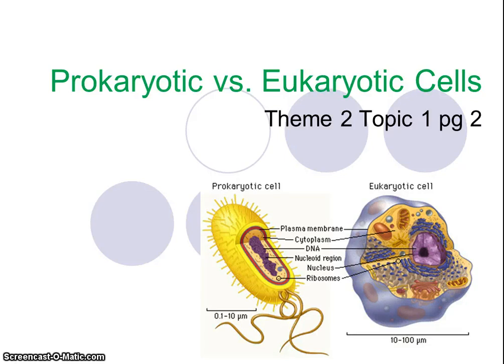Hello, biology students. Today we're going to be talking about two different major types of cells: prokaryotes and eukaryotes. This is our second page of notes for cells when we're in theme 2. Make sure you're labeling and dating your notes. Alright, let's get started.